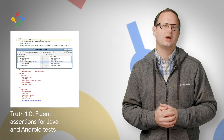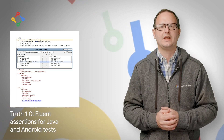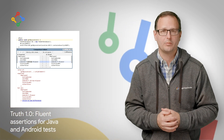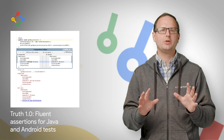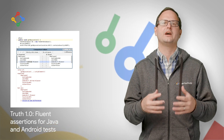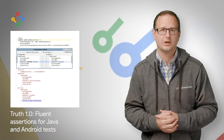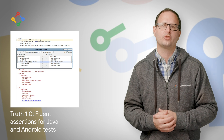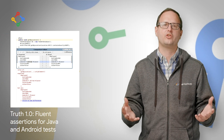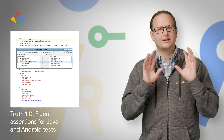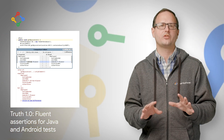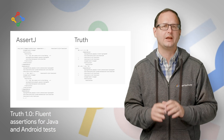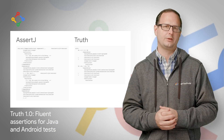Google's fluent assertion library for Java and Android is Truth. We've now released Truth 1.0, which stabilizes our API after years of fine tuning. You might already be familiar with assertion libraries like Hamcrest and AssertJ, which provide similar features. We've designed Truth to have a simpler API and more readable failure messages.